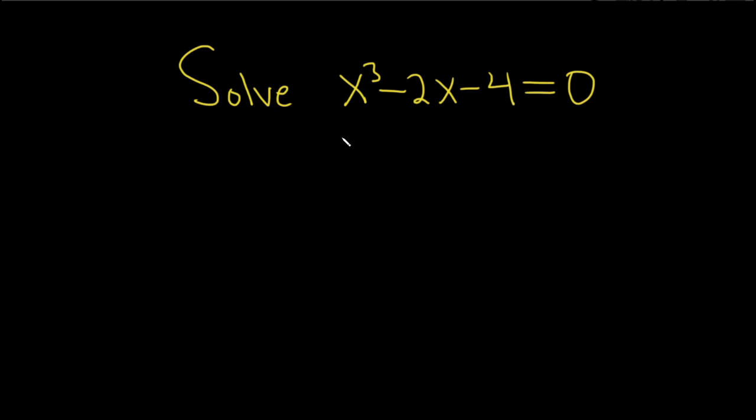Okay, in this problem we have to solve this cubic equation. So we have x cubed minus 2x minus 4 equals 0.